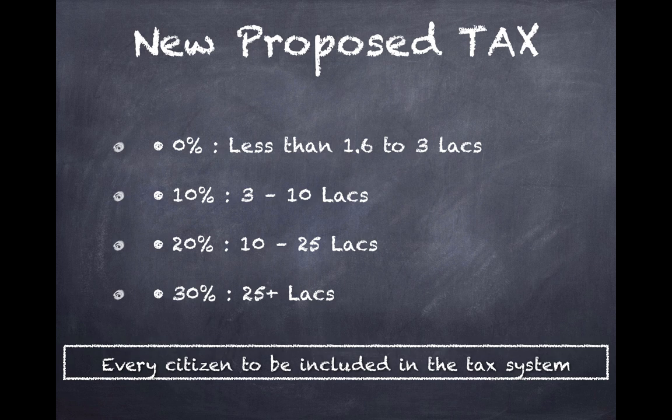Anyone earning more than 25 lakhs will pay a flat 30%. Currently, the rates are at 33% including surcharge for anybody who earns more than 10 lakhs, and for people who earn more than 50 lakhs the surcharge is up to 10%, making the effective maximum tax today around 34%. So you would see that immediately the tax rate would be brought down under the new direct tax system.